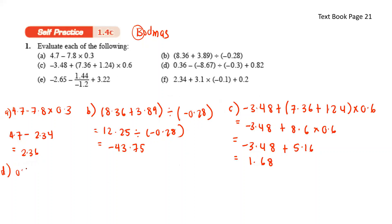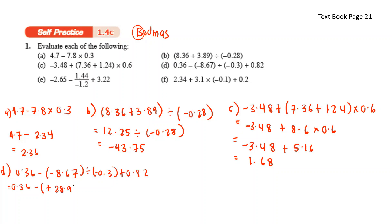For D: 0.36 minus negative 8.67 divided by negative 0.3, plus 0.82. We do the division first: negative divided by negative gives positive, so 8.67 divided by 0.3 gives 28.9. So we have 0.36 minus 28.9 plus 0.82. Put this in your calculator and you get negative 27.72.